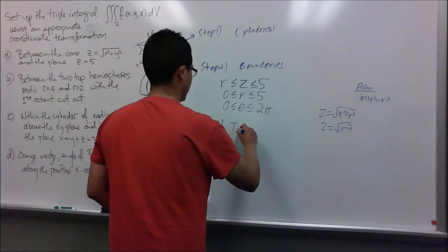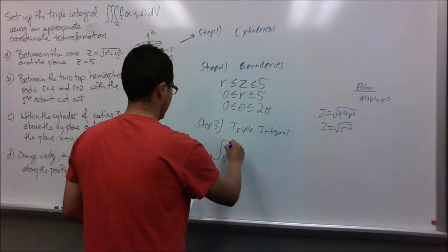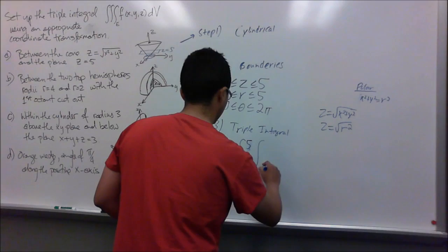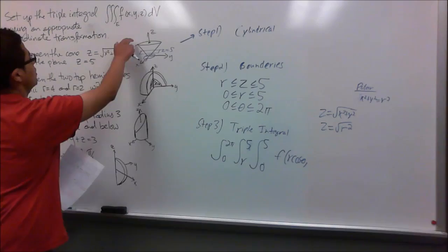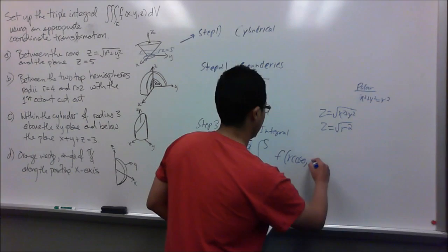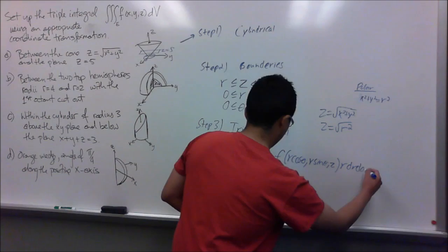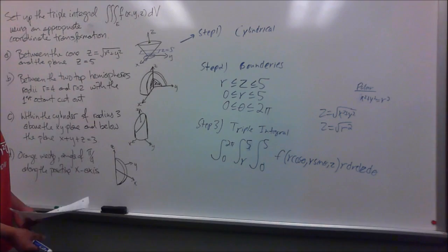Now we just have to set up the triple integral. The integrand will be f of r cosine theta, r sine theta, and z — plugging in for f of x, y, z — with the Jacobian factor r, giving us the appropriate triple integral for this solid.